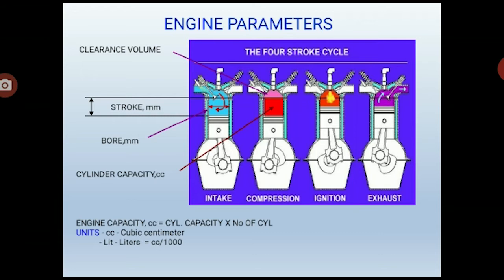The next engine parameter is the cylinder capacity, also called displacement, which is defined as the volume displaced by all pistons while moving from top to bottom. Engine capacity is expressed as cylinder capacity multiplied by the number of cylinders. Then the clearance volume, which is defined as the volume available above the piston at its topmost point.